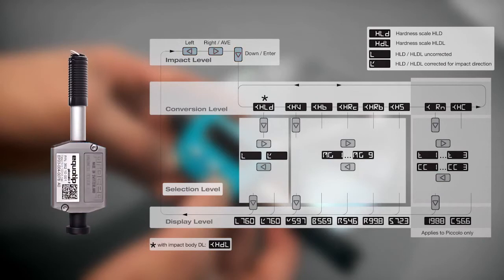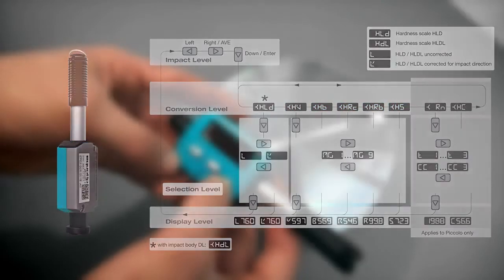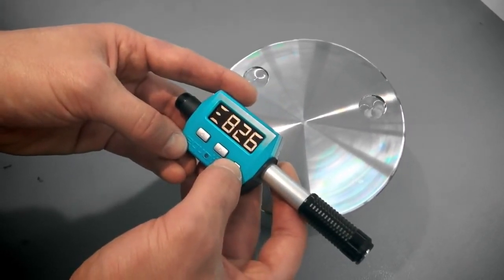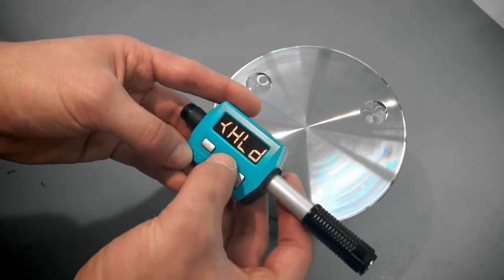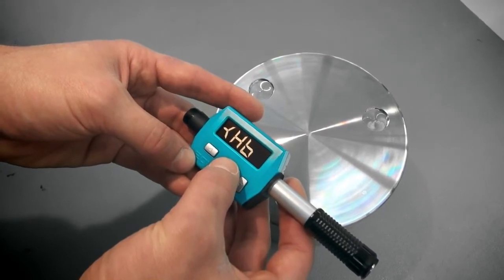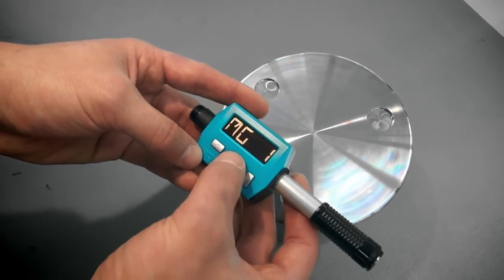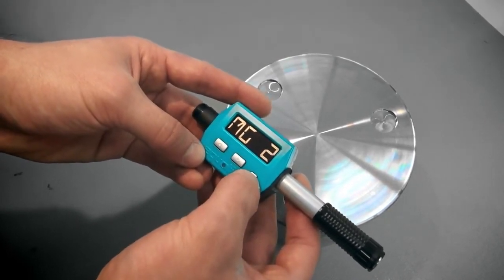If you need results in other hardness scales, such as Vickers, Brinell, Rockwell or Shore, the Ecotip Piccolo can perform the required conversions. Enter the conversion scale menu level by pressing the down key. If you press the right key, the instrument displays the different hardness scales. Select the required hardness scale by pressing the down key again. Select the appropriate material group by pressing the right or left key and confirm with the down key.